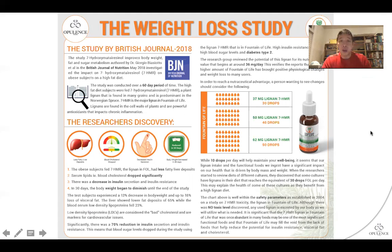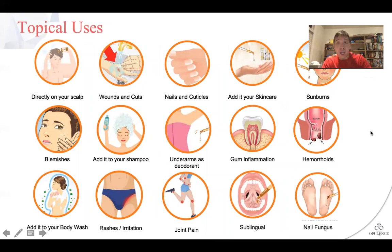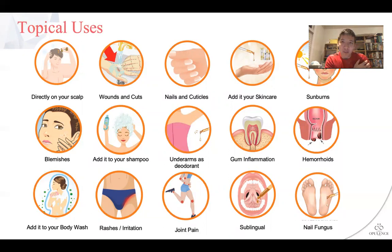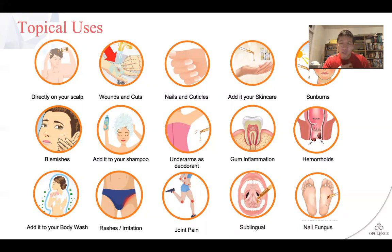Last but not least, Fountain of Life can also be used topically. It's great for the skin — the largest organ in the body — which also requires antioxidants. It's great to use directly on the scalp, on wounds and cuts where it'll heal very quickly, for growing nails and cuticles, and adding it to your skincare line. It is phenomenal on sunburns — just apply it two to five times a day and you don't get the peeling or painful soreness. It's really quick at healing the skin, great at blemishes, and you can add it to your shampoo. Some people use it on their underarms as a deodorant because it is antimicrobial. It's phenomenal at gum inflammation — I put it under my tongue for about five seconds, then swirl the rest in my gums, which is great for gum disease and receding gums, then swallow the rest. It's also fantastic for hemorrhoids and you can add it to your body wash.